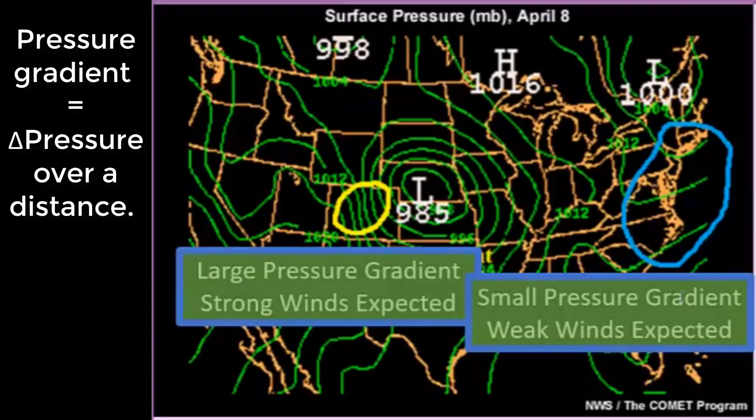Pressure gradient equals change in pressure over a distance. In the case of air pressure, large pressure gradients have closer isopotentials and strong winds are expected. Small pressure gradients have more spread out isopotential lines and weak winds are expected.